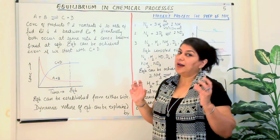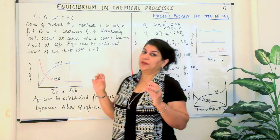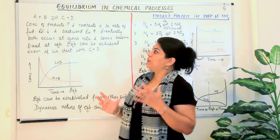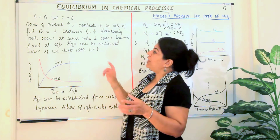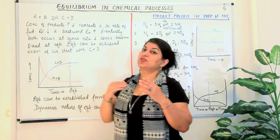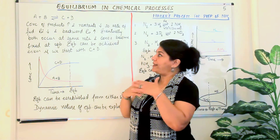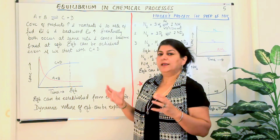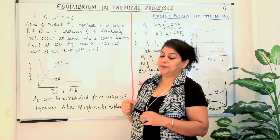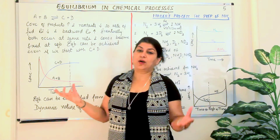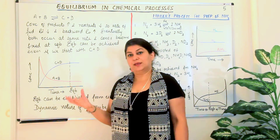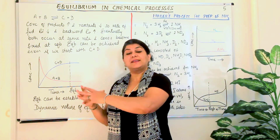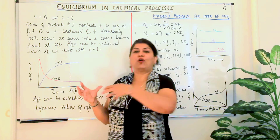Let us take a hypothetical equation. A and B are the reactants, and they react to produce C and D, which are the products. We have reactants A and B in equilibrium — the double arrow shows the existence of equilibrium between the reactants and the products. We started with the reactants, as we usually do, and these reactants react with each other and are consumed to form the products.